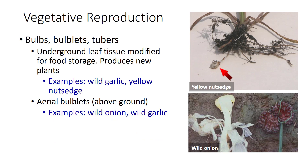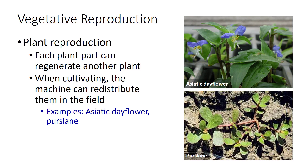Some weed species reproduce vegetatively by bulbs, bulblets, or tubers. These are underground structures that are actually leaf or modified stem tissue where carbohydrates are stored for later growth, overwintering, and production of new plants. Wild garlic and yellow nutsedge are examples of plants that have underground reproductive leaf tissue structures. Some plants also have above-ground bulblets that can produce new plants — wild onion and wild garlic are two examples. Some weeds can produce new plants from parts broken off the original plant. Purslane and Asiatic dayflower are two examples of plants that can regenerate from just a section of the original plant, surviving on the soil surface for several days without water and producing roots at the nodes to re-establish.